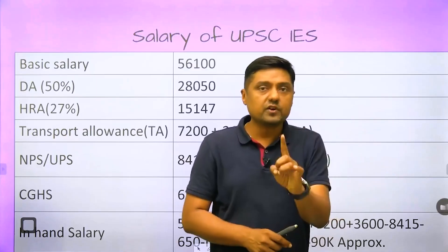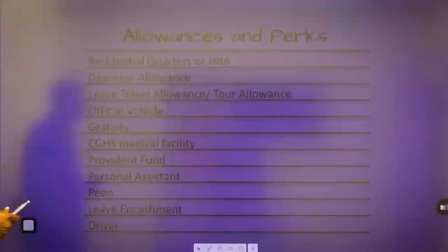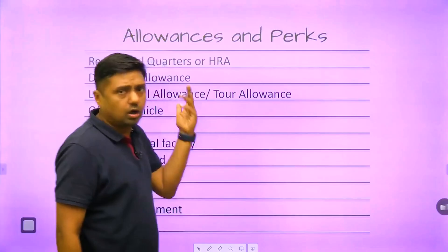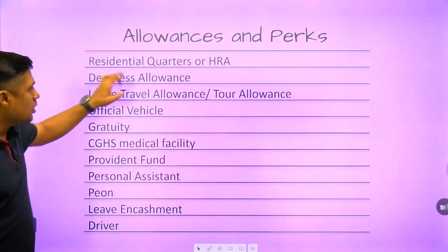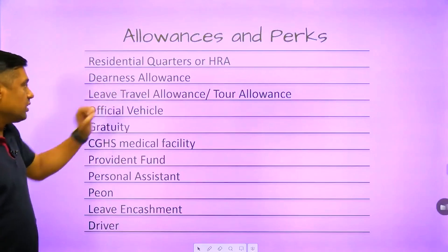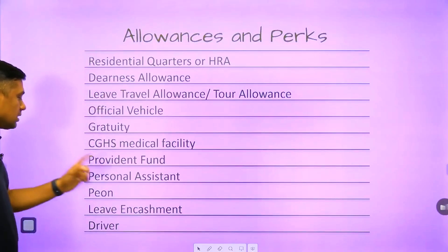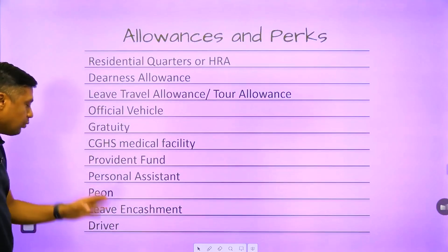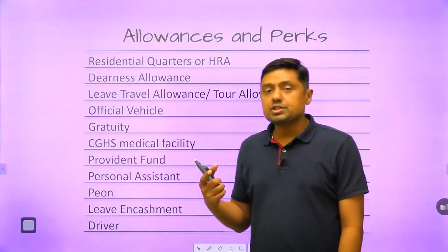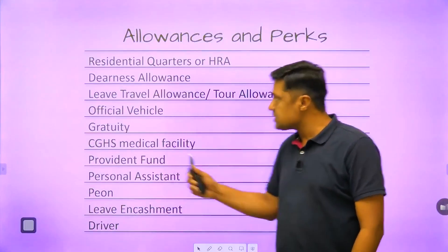You can apply the same formula for Class B posts to find the in-hand salary difference between a Class A and Class B officer in the first year. Allowances and perks include: residential quarter or HRA, dearness allowance, leave travel allowance (LTA), official vehicle, gratuity, CGHS medical facility, provident fund, personal assistant, peon, leave encashment, and driver — though these depend on the department and the nature of work (office or field).